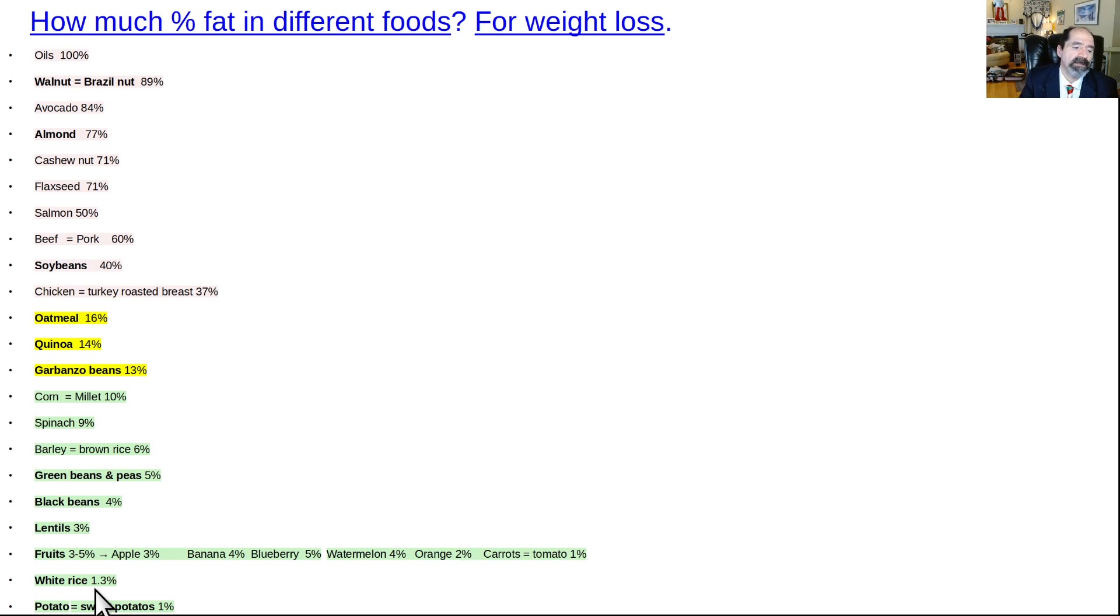You know, there's an arsenic issue. We talked about that separately. But these three starches come out as being the lowest in fat. The white rice, the potatoes, and the sweet potatoes. They're all around 1%, 1 to 1.3%. The lentils are the lowest in fat for the beans at about 3%. All the fruits are almost all the fruits are about 3% to 5% fat. So these are, you want to be skinny? This is how you can lower your fat intake. Fruits, white rice, potatoes, and sweet potatoes. And if you have to choose other beans, the black beans and the green beans are also quite low in fat.